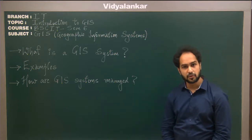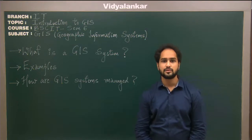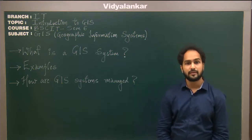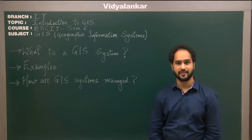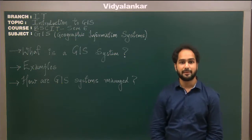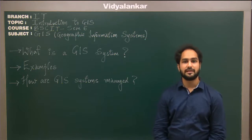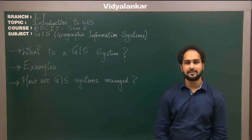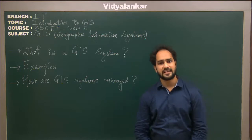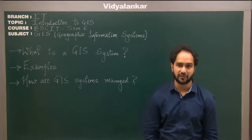Example number 2: GIS systems are used in day-to-day life for weather monitoring and forecasting. As we see in the news, the temperature for today in a given region is a minimum of 30 degrees Celsius and a maximum of 45 degrees Celsius. These are all GIS satellites which help in weather forecasting and monitoring.